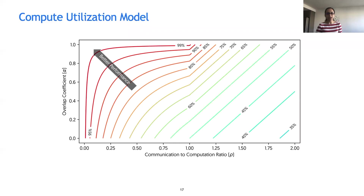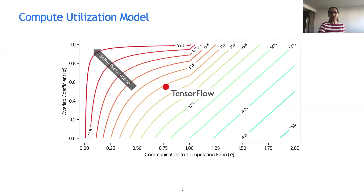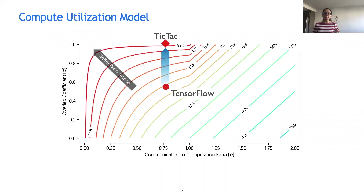We plot contour lines of GPU utilization in terms of alpha and rho. GPU utilization improves when overlap is high — you want to be higher on the y-axis — and communication-to-computation ratio is low — you want to be on the left of the x-axis. Vanilla TensorFlow with Inception V3 and four workers has about 75% utilization with nearly 0.5 overlap. In TicTac, we maintain the communication and computation times, so rho does not change, but we improve the iteration time by increasing the overlap.